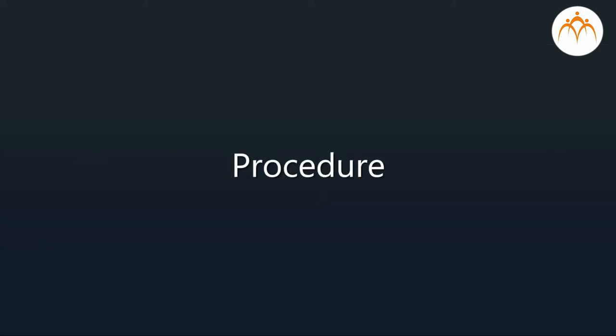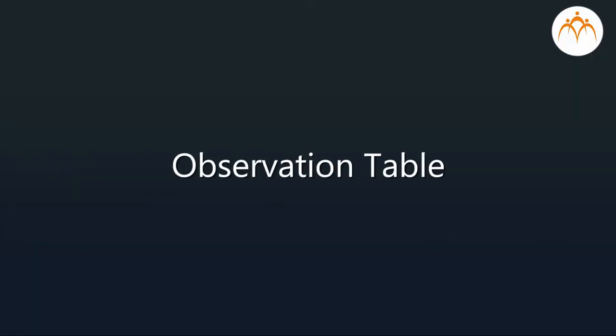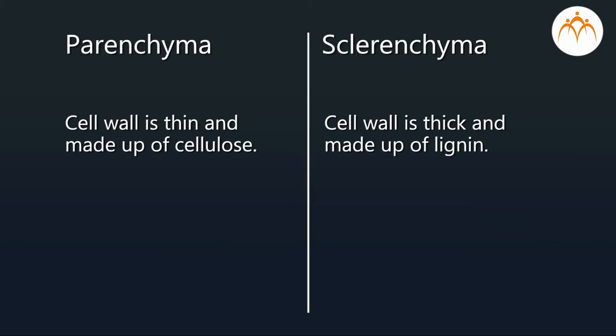Procedure: Observe slides of parenchyma and sclerenchyma under high power of the compound microscope, record their details, and sketch their diagrams along with labels. Observation table: record your observations as follows — parenchyma cell wall.